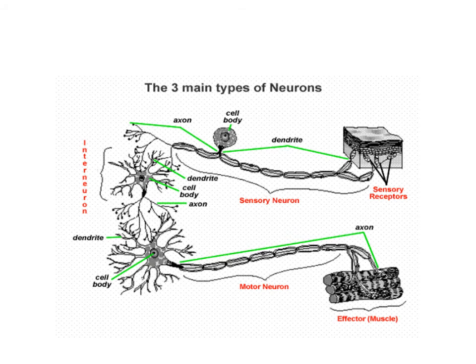Structurally, all neurons have dendrites, axons, and a cell body, and all neurons can be myelinated. However, when we compare the structure of sensory neurons to motor neurons, we can see that the sensory neuron has long dendrites and short axons, whereas the motor neurons have short dendrites and long axons.